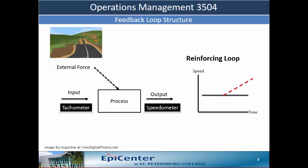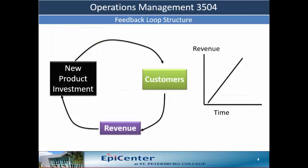Let's look at another example in business. We see many reinforcing loops in business as well. A company invests into new products — the cause — which are purchased by the customers — the effect. The resulting revenue, another cause, is then reinvested into new products, the effect. And this goes on and on until some external force is applied that impacts the revenue stream.